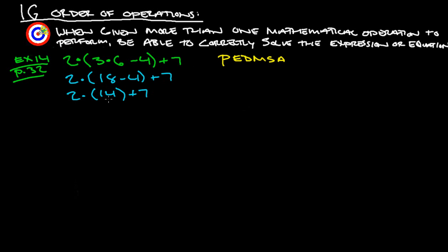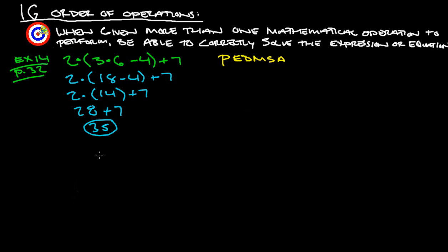The parentheses are done. There are no exponents and no division. Next is multiplication: 2 times 14 is 28, plus 7. Then we add those together and get 35.